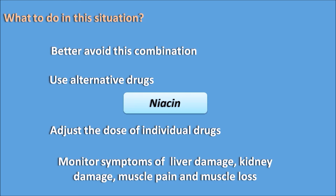Monitor for the symptoms of liver damage, kidney damage, muscle pain, and muscle loss. If this combination is used, thoroughly monitor for symptoms such as yellowish discoloration of the skin and eyes, reddening of the urine indicating blood in the urine, and any muscle pain or muscle disintegration. This combination should be stopped whenever these symptoms are observed. That covers the potential drug interaction between atorvastatin and gemfibrozil.